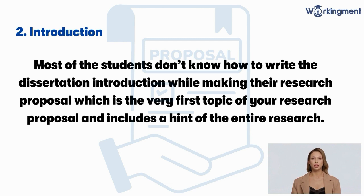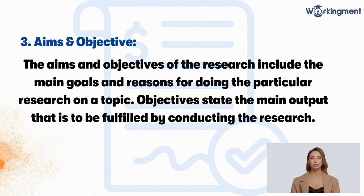Two: introduction. Most students don't know how to write the dissertation introduction while making their research proposal. The introduction is the very first topic of your research proposal and includes a hint of the entire research. Three: aims and objectives. The aims and objectives of the research include the main goals and reasons for doing the particular research on a topic. Objectives state the main output that is to be fulfilled by conducting the research.